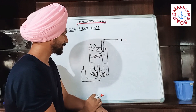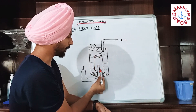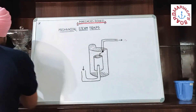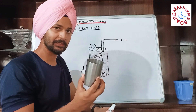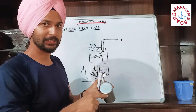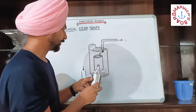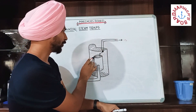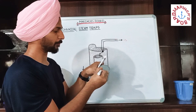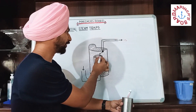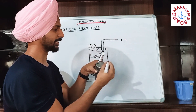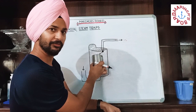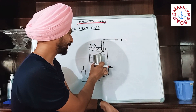This inner cylinder is closed at the top and open at the bottom, where the pipe goes inside. To make it simpler, it is similar to a glass where one end is open and the other is closed. The pipe goes inside from the open end. There is a hole at the top of the inner bucket, and the valve is attached to that hole. That is why it is called an inverted bucket steam trap — because the bucket is inverted inside it.